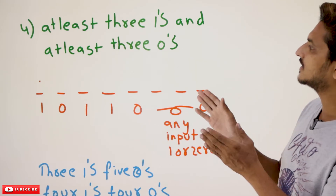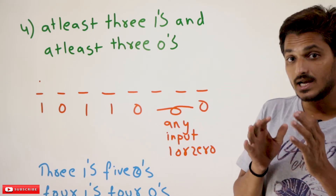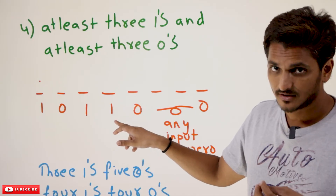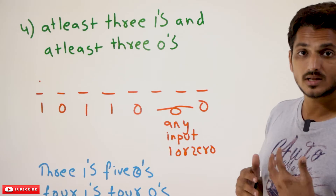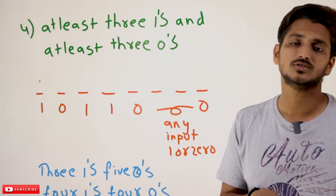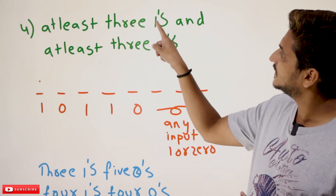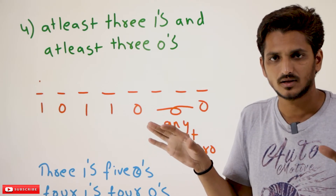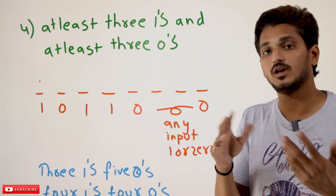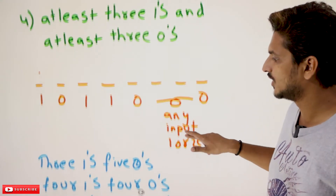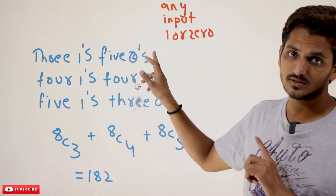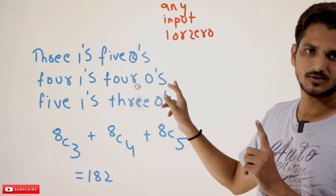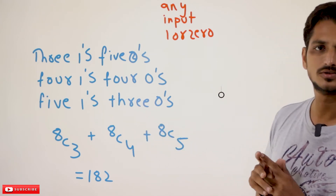The next question is: at least three ones and at least three zeros. For example, a string with three ones and five zeros satisfies at least three ones and at least three zeros. We have at least three ones and three zeros as compulsory; the remaining two positions can be either one or zero. So the valid possibilities are: three ones five zeros, four ones four zeros, and five ones three zeros.